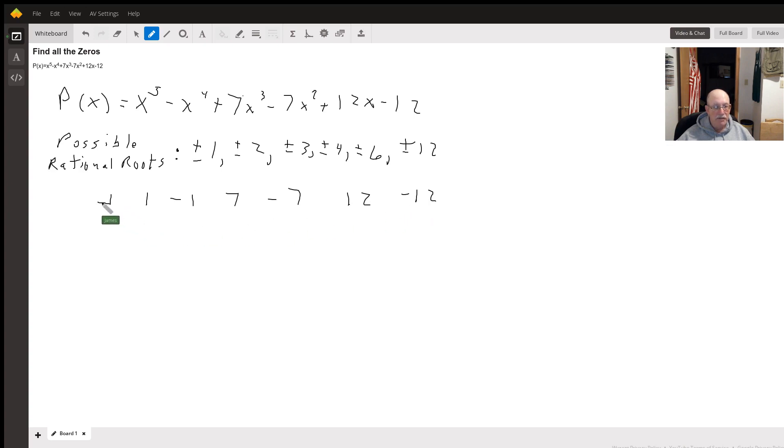And I'm going to use 1 for the first possible rational root. So I bring down the 1, I get 1. This is 0, this is 0. I get 7, this is 7, I get 0 again. So I get a 0 here, I get a 12 here, and I end up with the remainder of 0. That tells me 1 is one of my zeros.